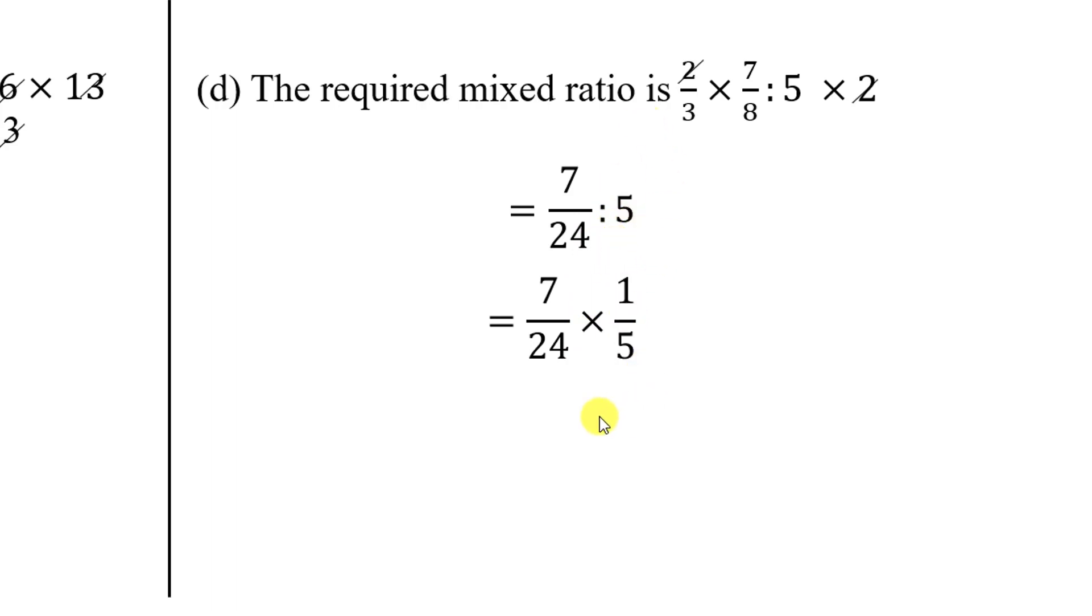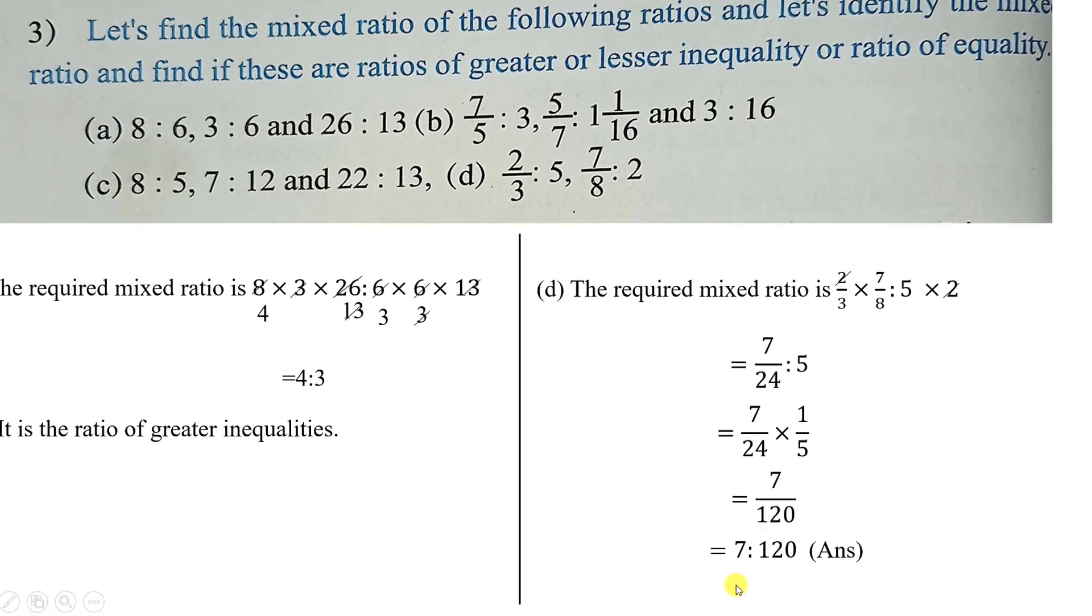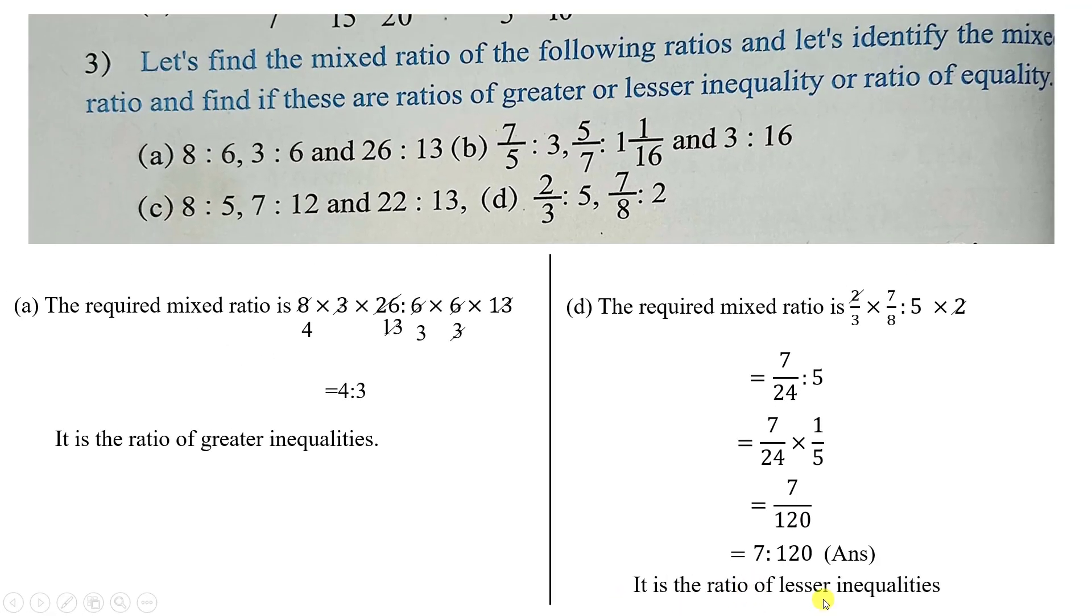This down 1. So, 1 up. 1 by 5. Now multiply. 7×1 is 7. 24 into 5, 120. So, final ratio is 7:120. Obviously, what is it. It is the ratio of lesser inequalities. This is how we solve this problem. Ok?